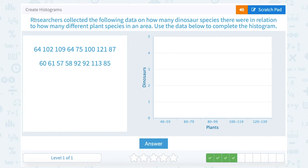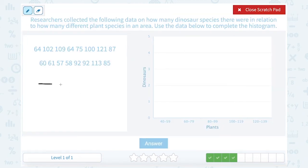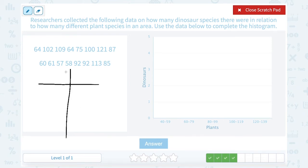Researchers collected the following data on how many dinosaur species there were in relation to how many different plant species in an area. Use the data below to complete the histogram. Okay, so this one I'm going to have to do a little bit more work because they gave me the raw data and I need to create the table myself.